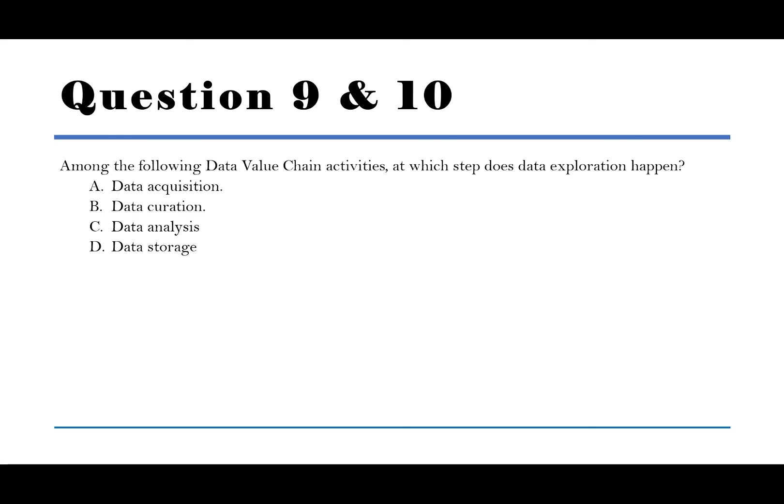Question number 9: Among the following data value chain activities, at which step does data exploration happen? A. Data acquisition. B. Data curation. C. Data analysis. D. Data storage. The answer is C, data analysis.